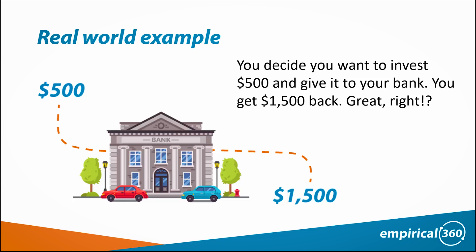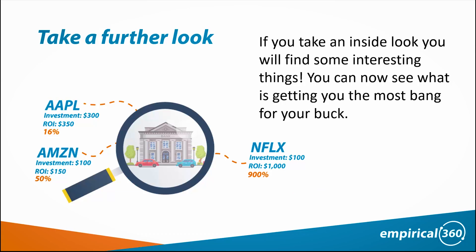This is especially useful when you're working with a limited Google Ads budget or just trying to spend your budget more effectively. Let's say you have $500 to invest — you give it to the bank and they spit out $1,500. That's great, you made $1,000, but could you have done better? There's really no way to know because the bank is in charge of it — it's a black box operation and you don't know what happened.